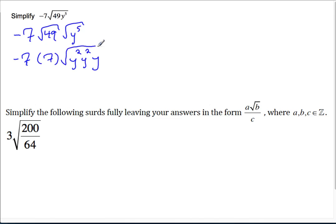So when we have a third, anything times itself can come out. So y squared times y squared, the square root of that is y squared. And underneath there is still the square root of y.